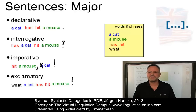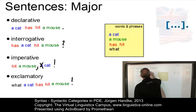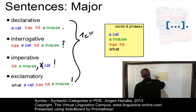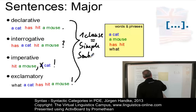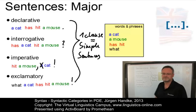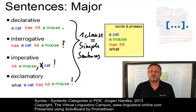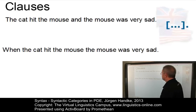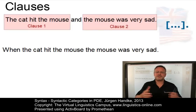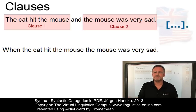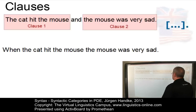So, these are our four sentence types. All these sentences consist of one clause only. If you have sentences that consist of one clause, you call them simple sentences. However, sentences may also have more than one clause. In The cat hit the mouse and the mouse was very sad, we have two clauses that can stand on their own, connected by AND. Such a sentence with two independent clauses is referred to as a compound sentence.